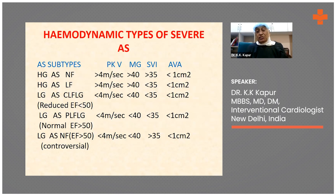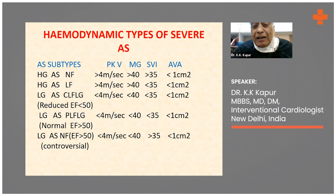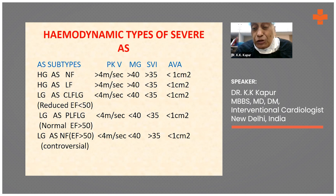Sometimes these criteria don't all go hand in hand. If you have severe aortic stenosis where the aortic valve area is less than 1 centimeter squared, the mean pressure gradient is more than 40 millimeters of mercury, and the stroke volume index is more than 35 ml per meter squared — that is what we call high gradient aortic stenosis with normal flows. That is the usual type of valvular aortic stenosis that we see.